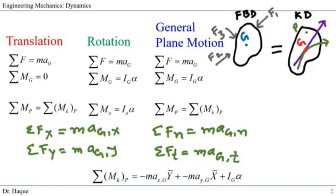Now let's talk about translation first. Look at the image — we have the free body diagram and the kinetic diagram of this rigid body. All the forces F1 to F3 are acting on the body, or there could be some moment acting on the body. The resultant kinetic motion diagram caused by this force and moment could have a rectilinear acceleration, shown by this rectilinear line. And for curvilinear translation, we will have this curve, shown by the green line.